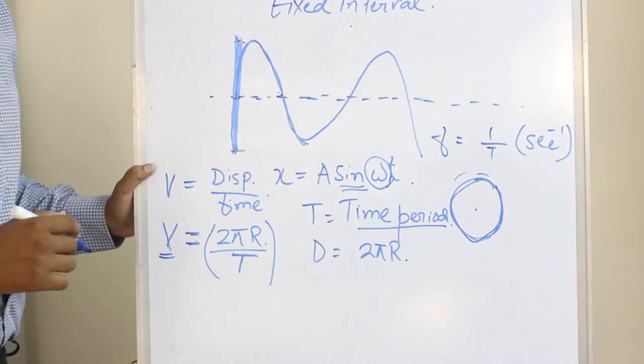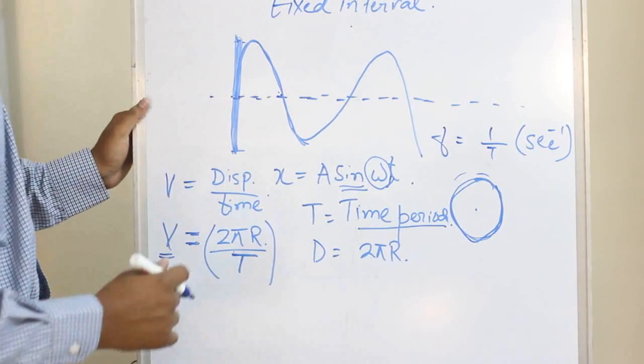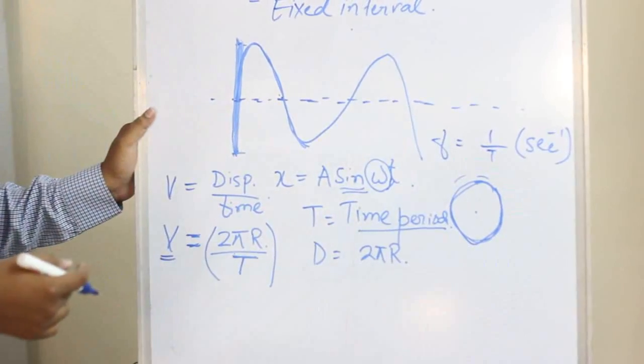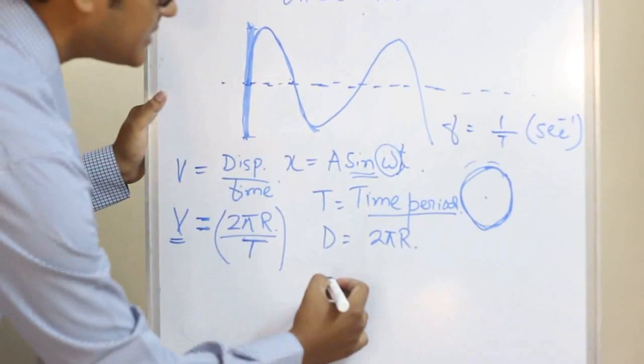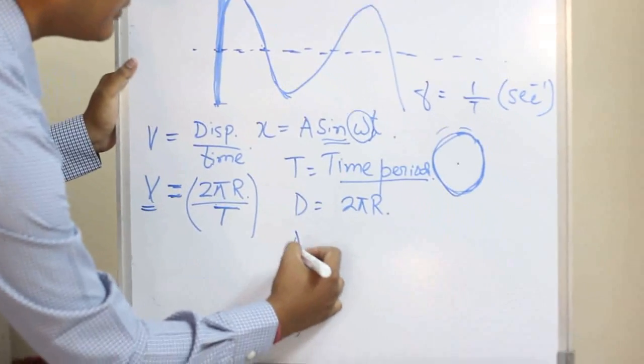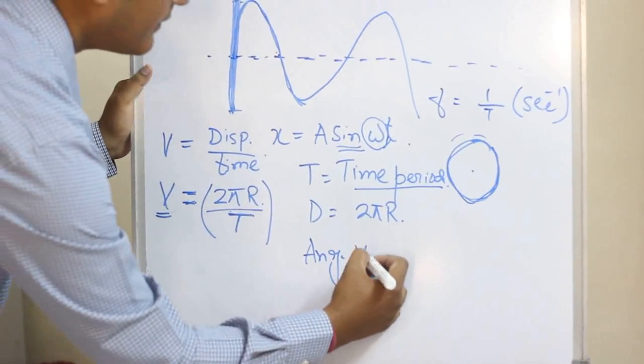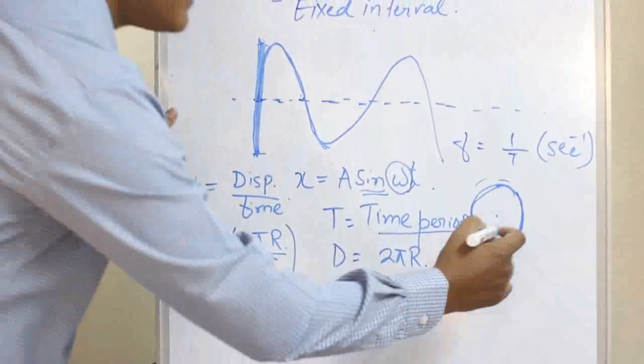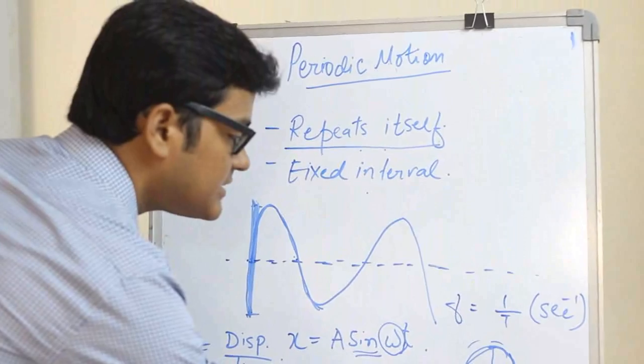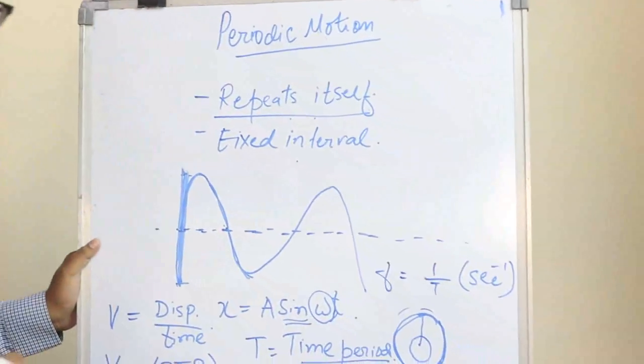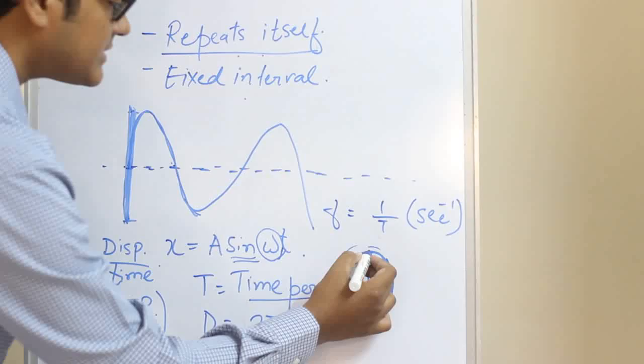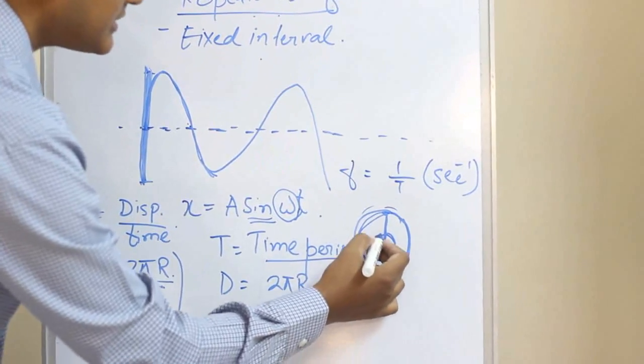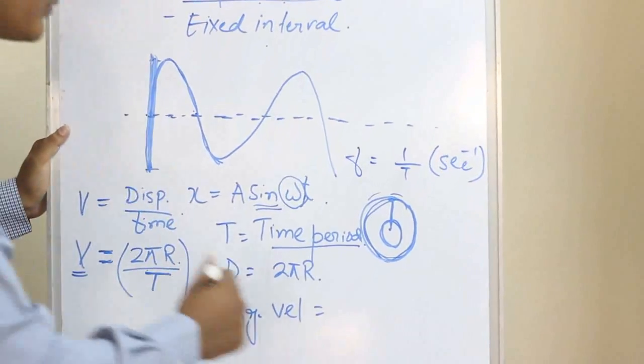But is that the angular velocity also? I don't think so. The angular velocity would be the angular displacement upon the time taken. Now what is the angular displacement? Angular velocity equals angular displacement by time taken. The angular displacement is the displacement in the angle. Now how much displacement does this body cover in terms of angle? 360 degrees, or 2π.